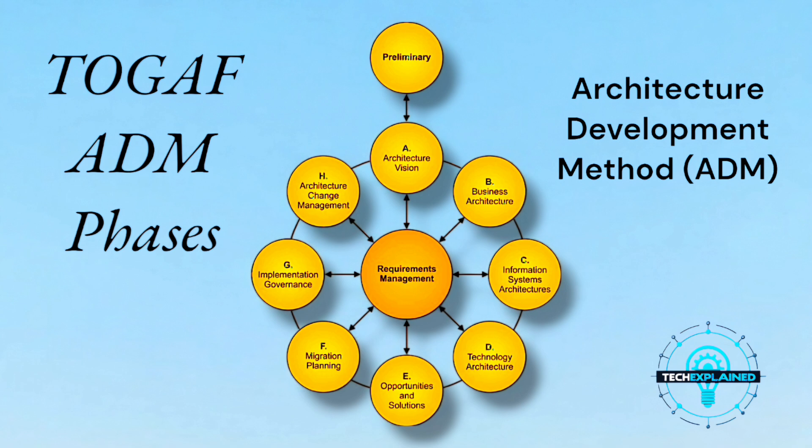Phase F is Migration Planning. This is where you create a timeline and budget for turning the dream into reality. For your house, it's deciding when to start construction, which contractors to hire first, and how to sequence the work. For businesses, it's planning how to roll out new systems or processes without disrupting everything. You map out the steps and prioritize what gets implemented first.